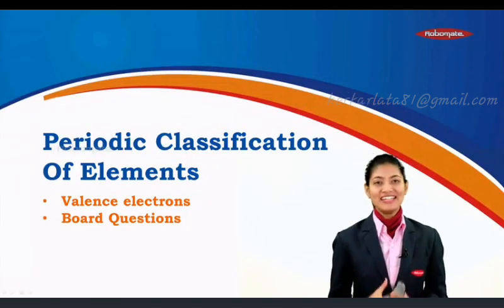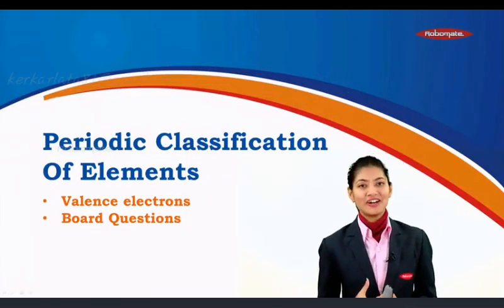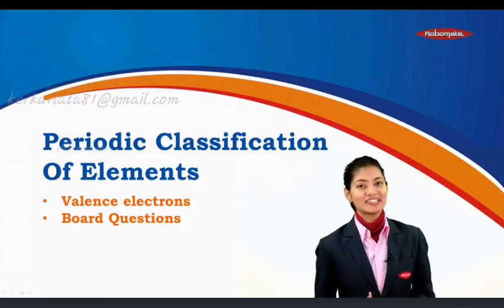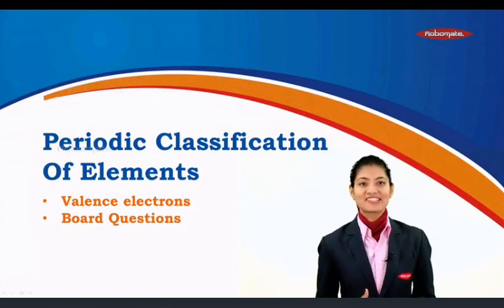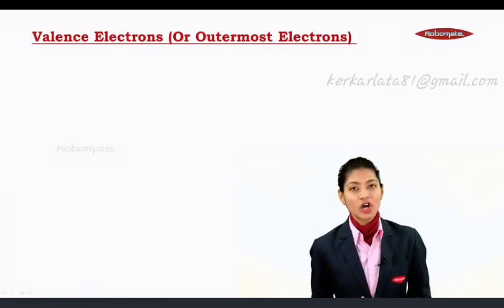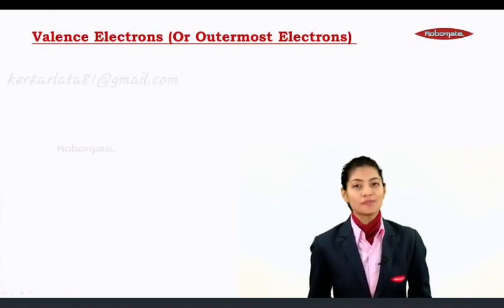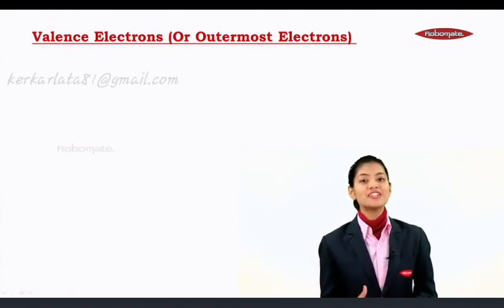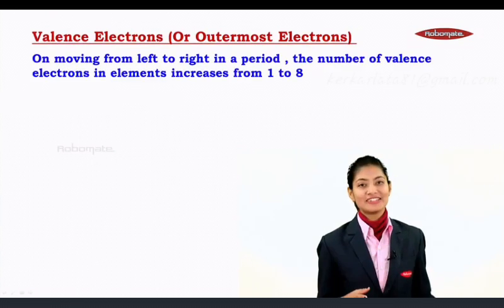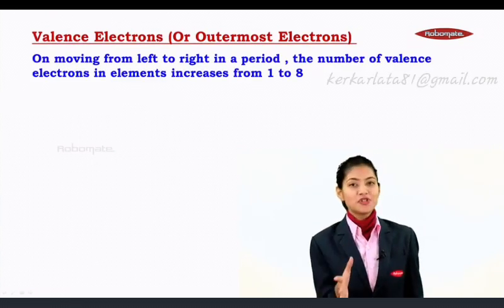Welcome back to the next module. In this module we are going to cover valence electrons and the board questions regarding the same. Let's get started. Valence electrons also means the outermost electrons. Let us first talk about the valence electron in a period, that is on moving from left to right.